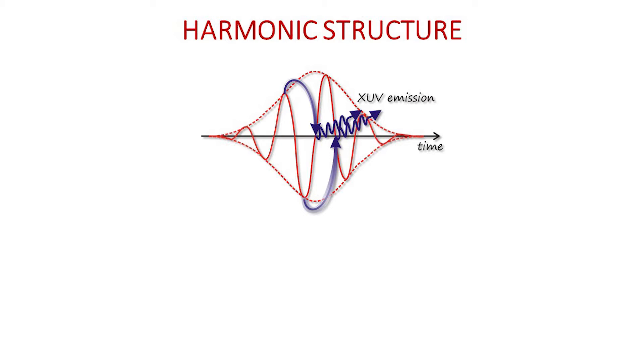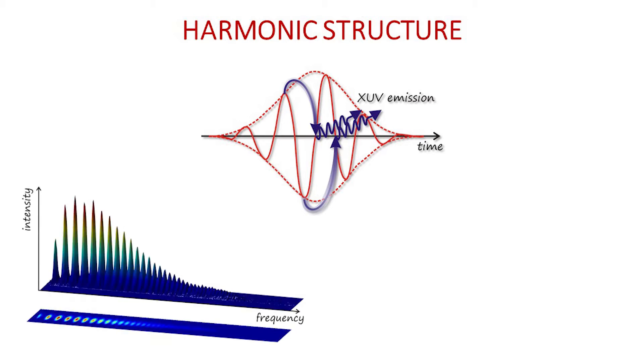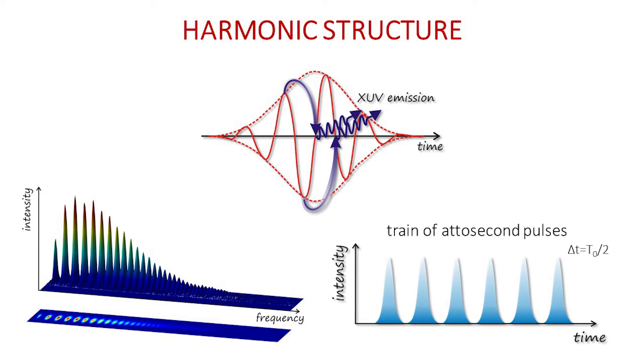This process is repeated periodically every half-cycle of the external laser field, and this periodicity corresponds to the emission of odd harmonics of the fundamental driving wavelength in the spectral domain. Correspondingly, in the temporal domain, harmonics are emitted as a train of attosecond pulses separated by half the period of the driving laser field.